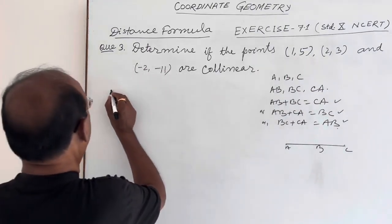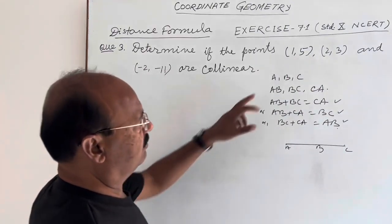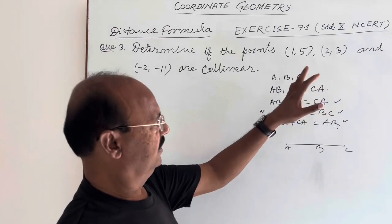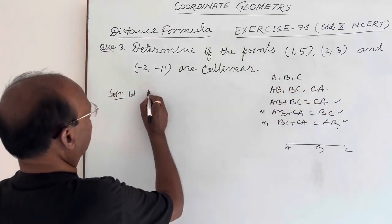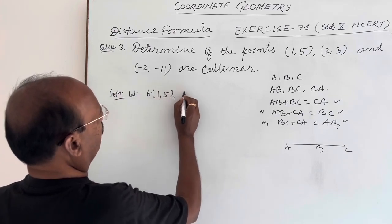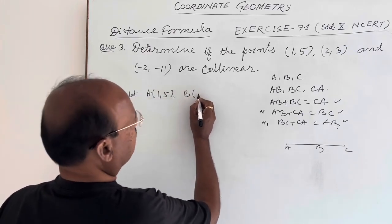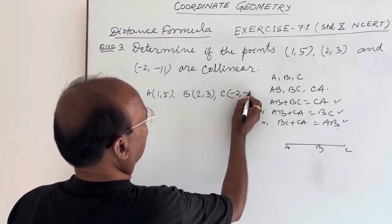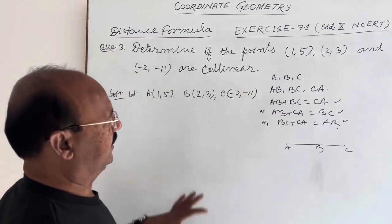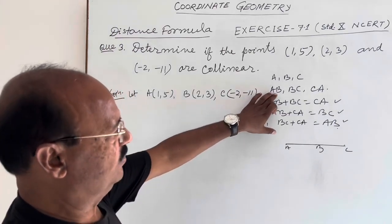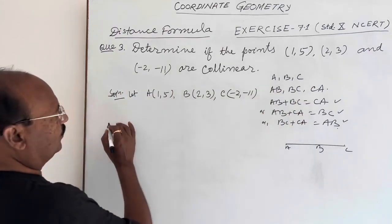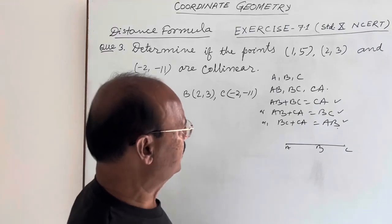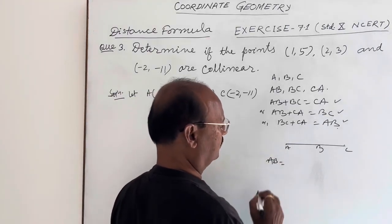Now let us see the solution. Three points are given, so let us suppose they are A, B, and C. Coordinates of A are (1, 5), coordinates of B are (2, 3), and coordinates of C are (−2, −11). We will now find the lengths of line segments AB, BC, and CA.